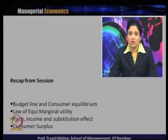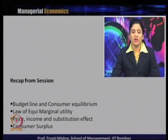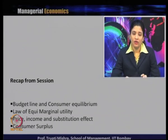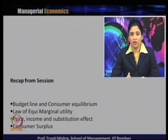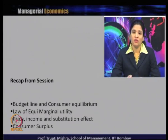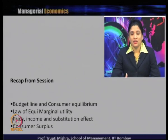Then we discussed the law of equimarginal utility: when the consumer has to make choices between two goods with a limited income constraint, how they generally take a decision. The thumb rule is that whatever money income they are spending on each of these goods, they will get at least the same level of utility.